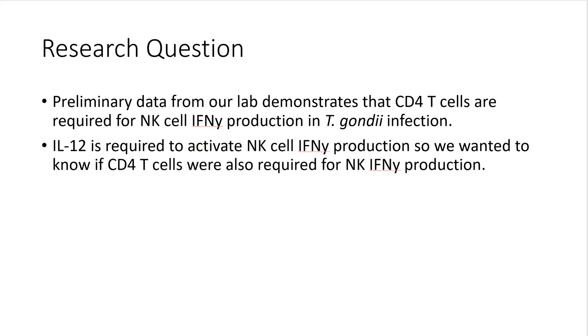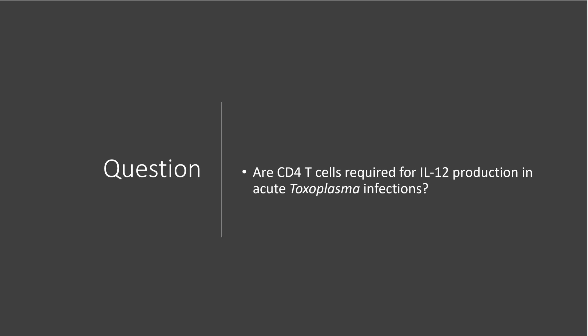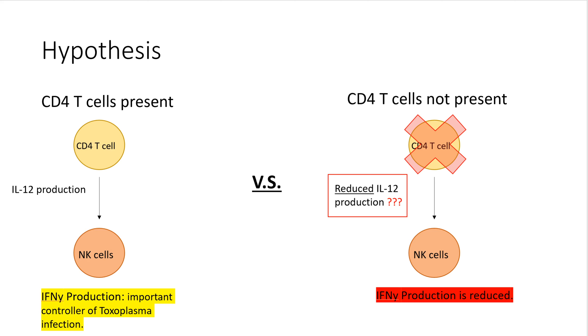Preliminary data from our lab has demonstrated that CD4 T cells are required for NK cell interferon gamma production in Toxoplasma gondii infection. Since IL-12 is required to activate NK cells to produce interferon gamma, we wanted to know if CD4 T cells are also involved in regulating NK cell interferon gamma production. My research question is: are CD4 T cells required for IL-12 production in acute Toxoplasma infections? My hypothesis states that if CD4 T cells are present, IL-12 will be produced and NK cells will be stimulated to produce interferon gamma. However, if CD4 T cells are removed, IL-12 production will be reduced, which will therefore reduce interferon gamma production by NK cells.